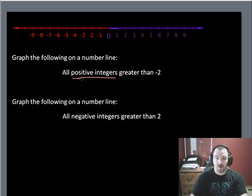Alright, so if we graph all positive integers greater than negative 2, if we don't graph negative 2, negative 1, or 0, we have to start at 1. And so we simply throw a white dot at 1, a white dot at 2, at 3, at 4,